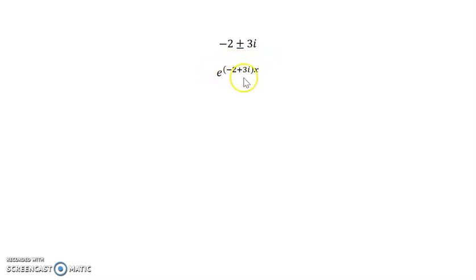We're going to start off with a form that looks like this. The next thing we want to do is separate out the complex part from the real part, using properties of exponents. The real part is going to be this negative 2 times x, and then the other complex part is going to be in its own base, which is 3xi.